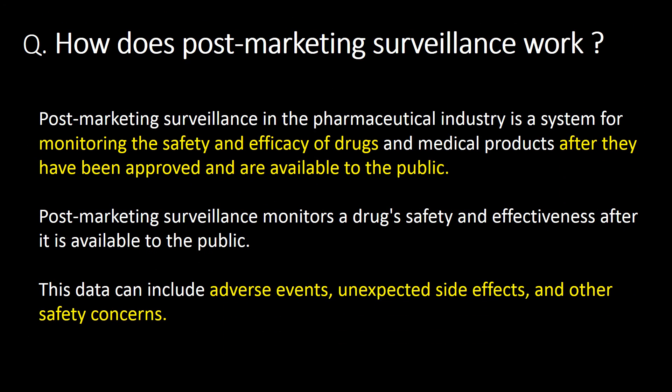How does post-marketing surveillance work? Post-marketing surveillance in the pharmaceutical industry is a system for monitoring the safety and efficacy of drugs and medicinal products after they have been approved and are available to the public. Post-marketing surveillance monitors a drug's safety and effectiveness after it is available to the public. This data can include adverse effects, unexpected side effects, and other safety concerns.